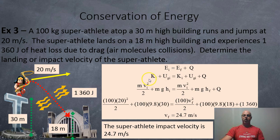So our initial energy is equal to our final energy plus our heat loss. So initially they've got kinetic energy. They're moving at 20 meters per second. They're on a building, which is 30 meters high. So that's gravitational energy. They're going to land pretty fast. Kinetic energy. And they're going to land on a building. So it should be UGF right here.